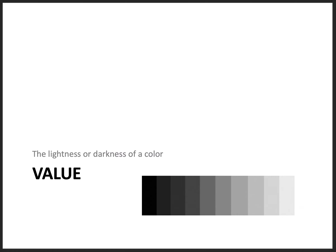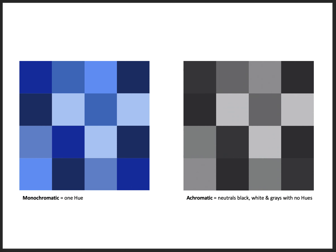The next characteristic of color is value. Value is defined as the lightness or darkness of a color. As we look at these two grids, the one on the left is a monochromatic grid — it has one hue, and all of those specific colors are blue. On the right, we have no hues; it's an achromatic grid of black, white, and neutral grays. When we squint at these, we see that each square on the blue side matches up with each square on the achromatic side in terms of value — the lightness or darkness is the same whether we're using blue, red, green, or black, whites, and grays.